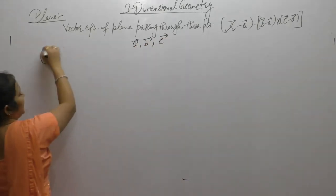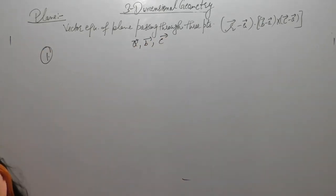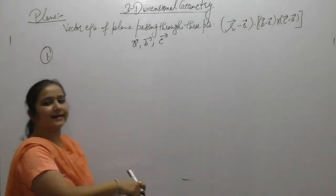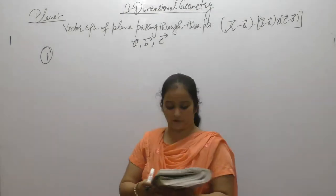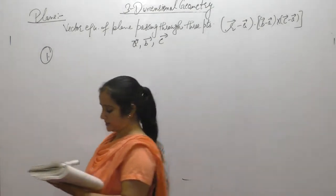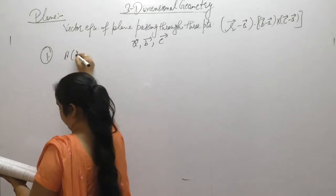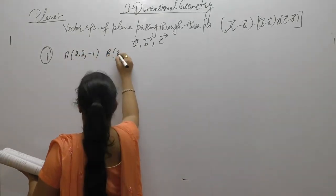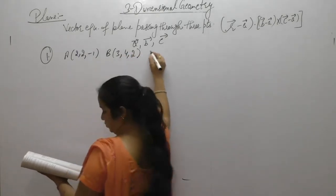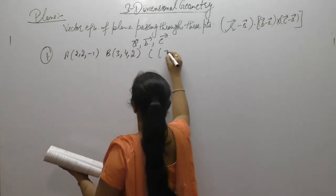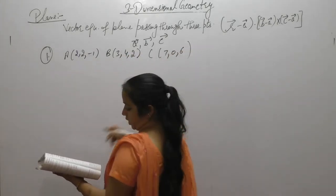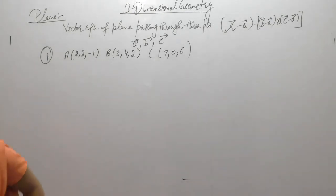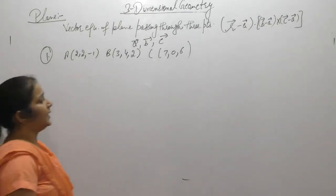Let us start with question number 1: Find the vector equation of the plane passing through the points (2, 2, -1), (3, 4, 2), and (7, 0, 6). Also find the Cartesian equation of the plane.